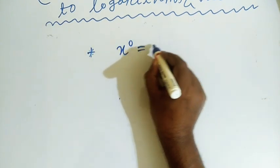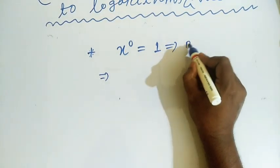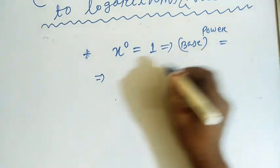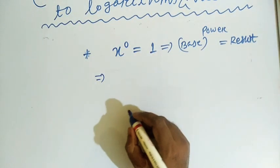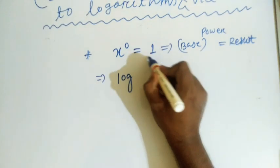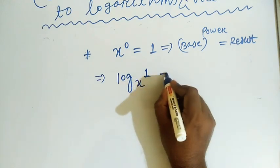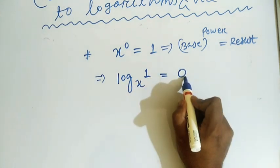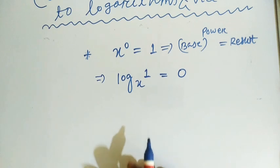Now the question is x to the power 0 is equals to 1. Something to the power 0 you know is 1. So here base to the power equals the result. This is the exponential form. If you want to convert it to logarithm form, it will become log of result, which is 1, with base x equals the power 0. So log 1 equals 0. Log 1 with base x is equals to 0.